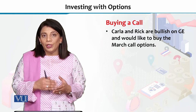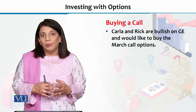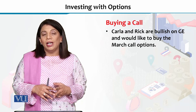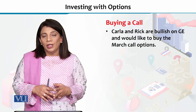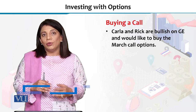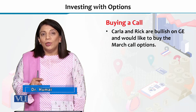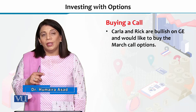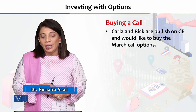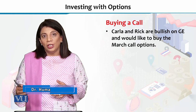Suppose we have these two people, Carla and Rick, and they are assuming that GE — General Electric stock — is going to increase in price. We have talked about the technical term: they are bullish on GE.